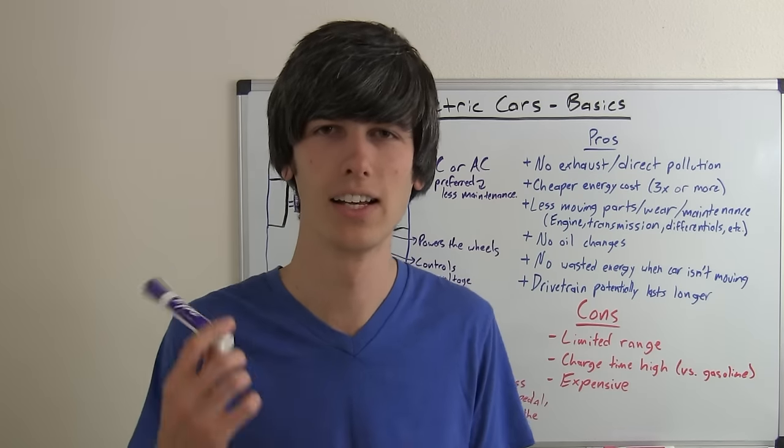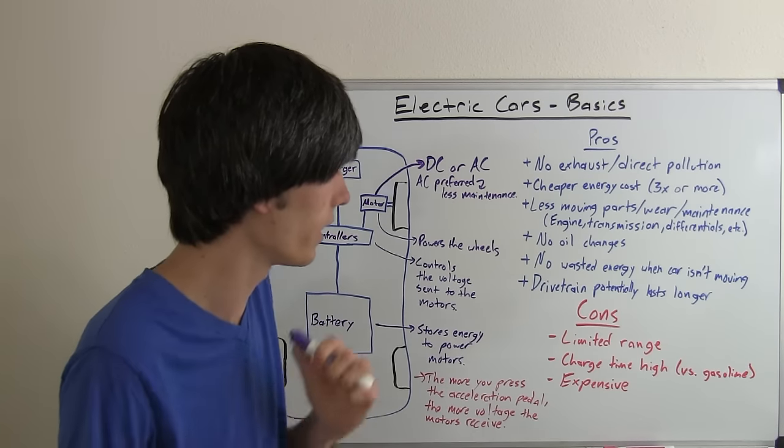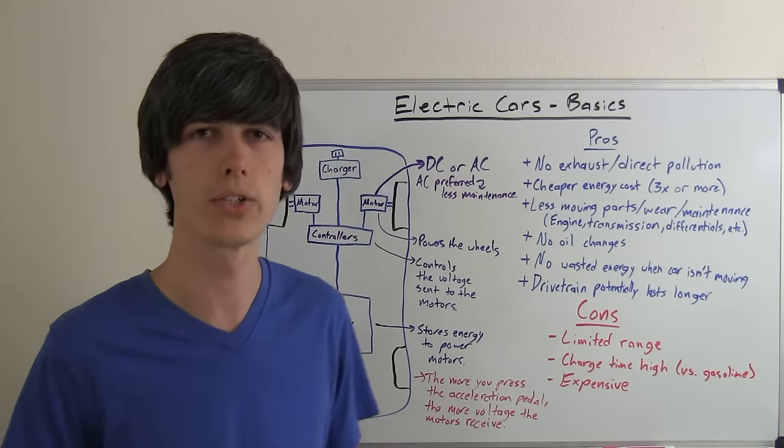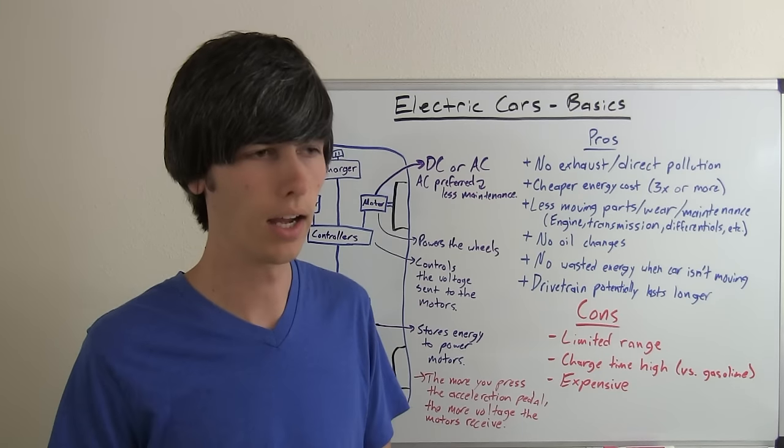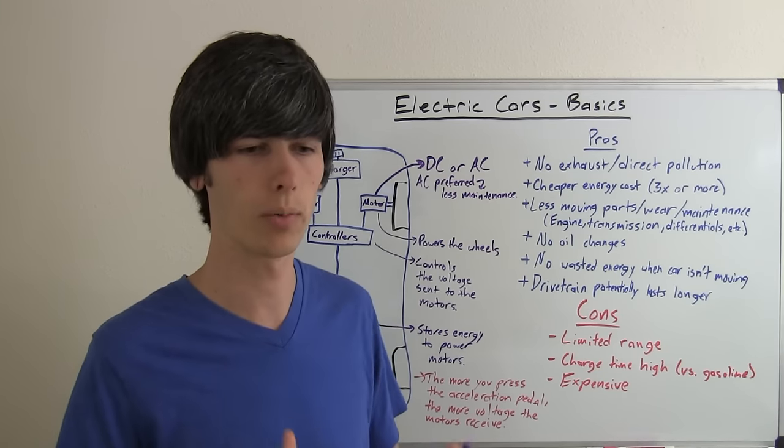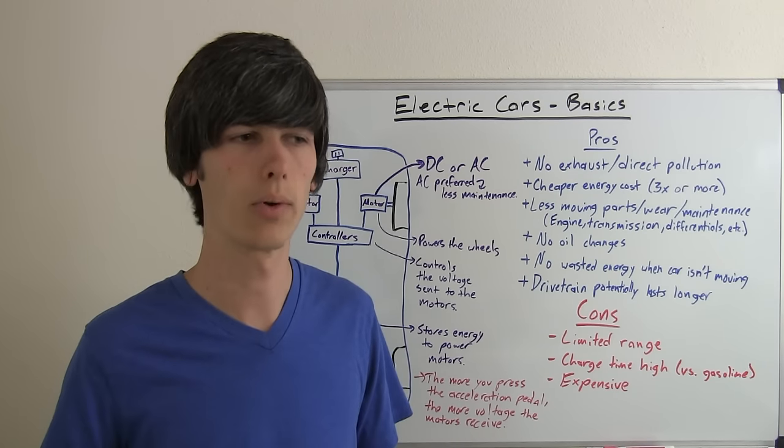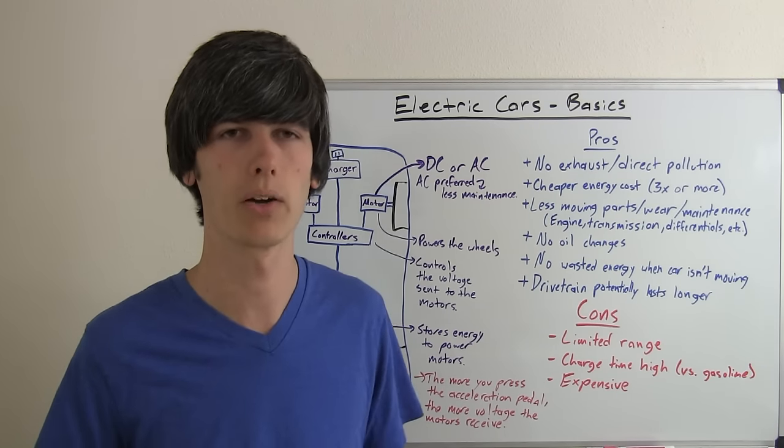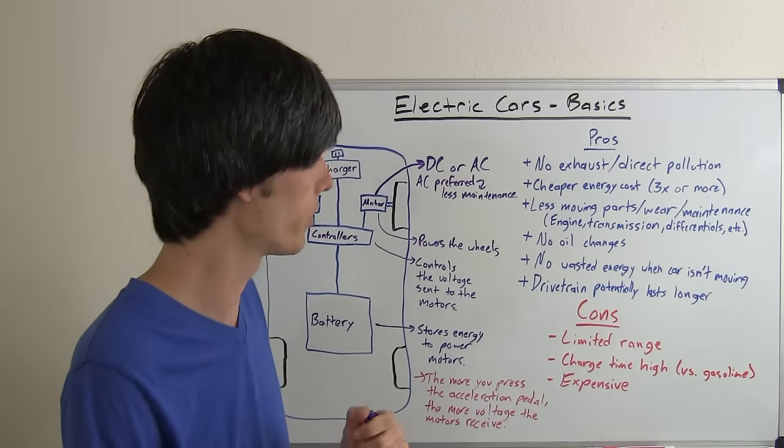Some of the negative points of an electric car - why don't you want to buy one? Well, the range isn't quite there yet. Modern electric cars are somewhere around the 100 mile range. Tesla's got models with a bit further range, but of course they're very expensive.